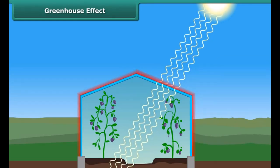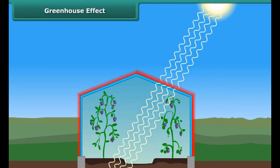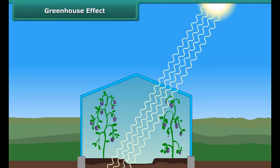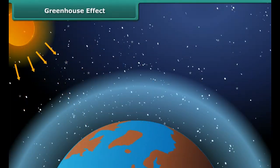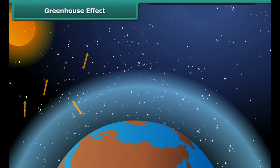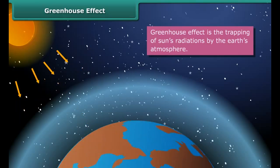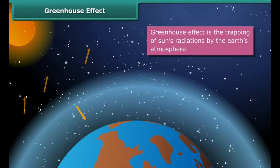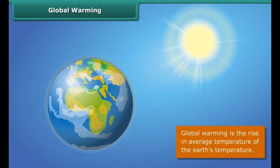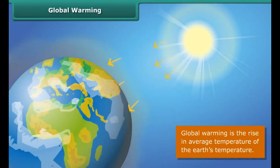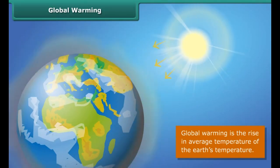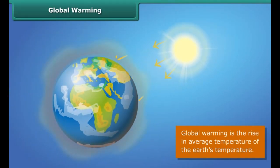Similarly, the greenhouse gases like carbon dioxide, methane, and nitrous oxide in the atmosphere act like glass panes. When the sun's radiation reaches our atmosphere, some rays are reflected back into space and some are trapped by the greenhouse gases, causing the atmosphere of the earth to warm up. Global warming means the earth is heating up, and scientists believe the earth's temperature will increase even more in coming years.